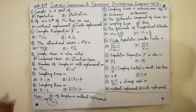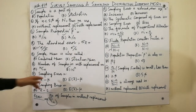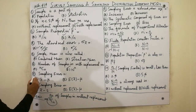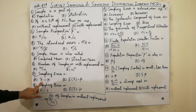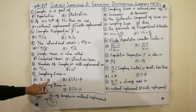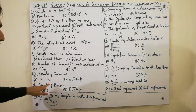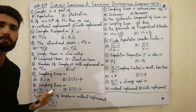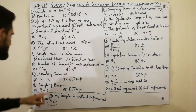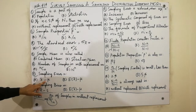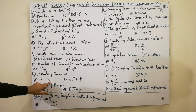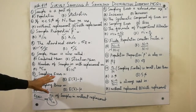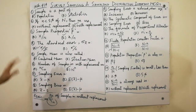Sampling error is very simple. Sampling error is equal to x-bar minus mu, where x-bar is the sample statistic and mu is the population parameter. The difference between sample statistic and population parameter is called sampling error.